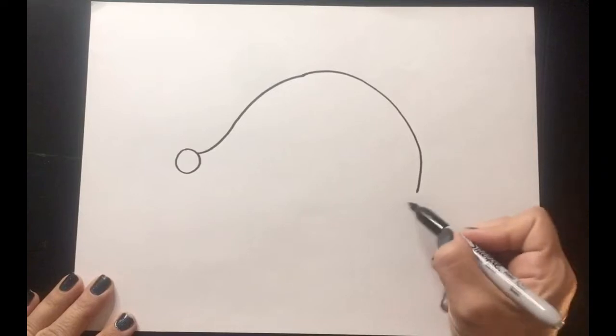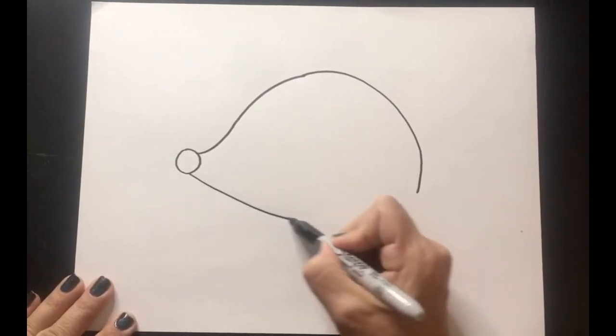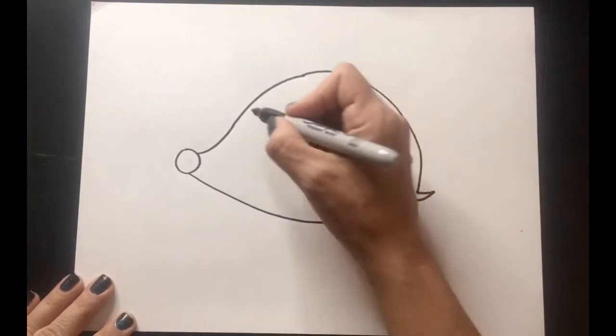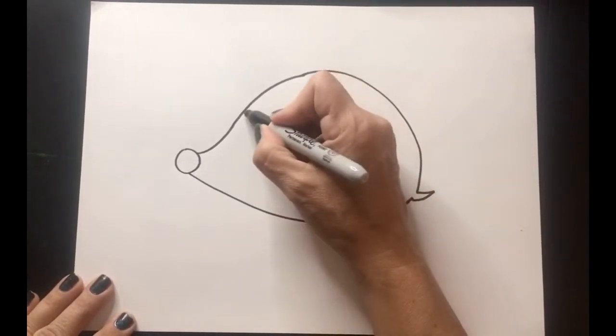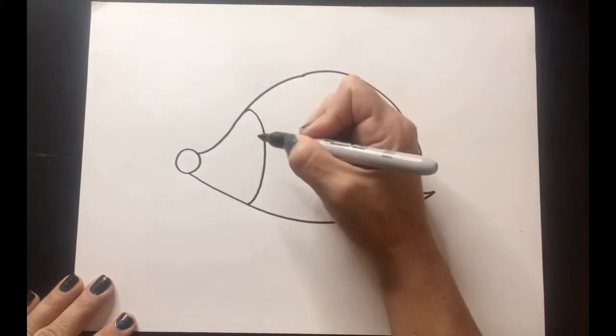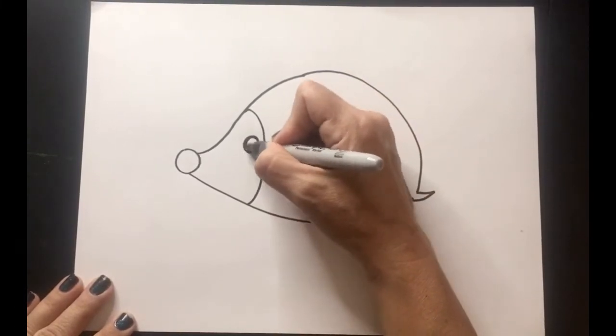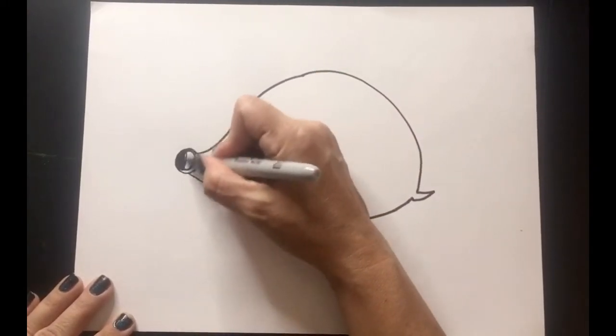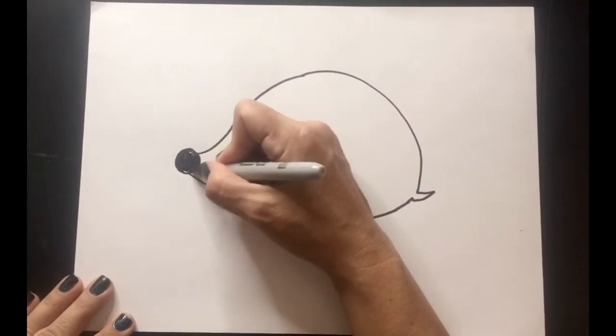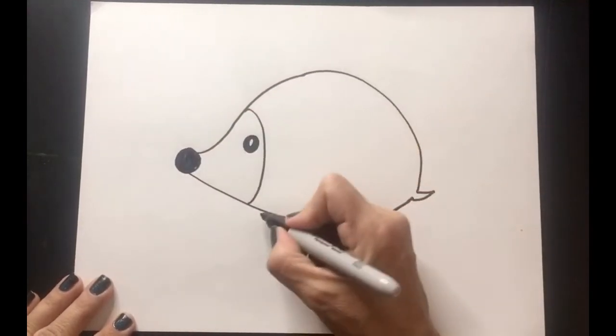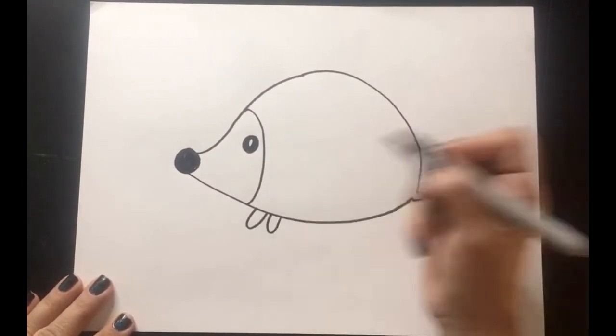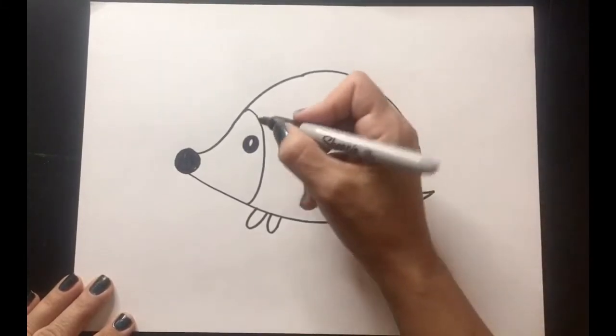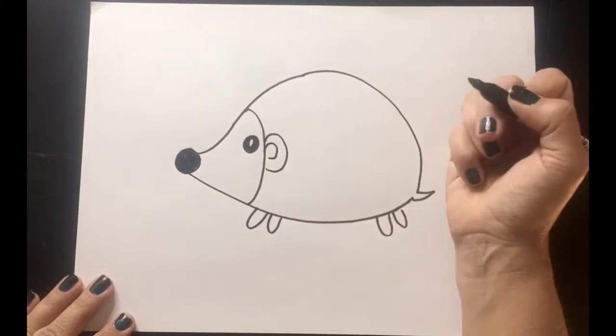Now we're going to draw the bottom of the hedgehog. And did you know they have a little tail? Now let's draw the hedgehog's face. And a circle for his eye. His cute little feet. I think I'm going to add an ear on this one to see how it looks.